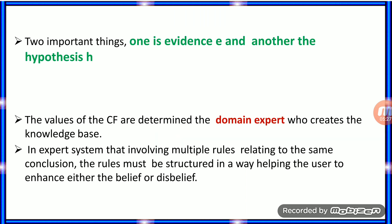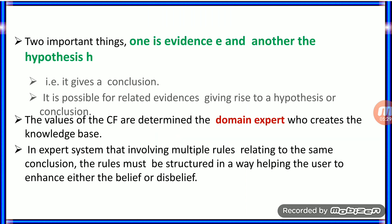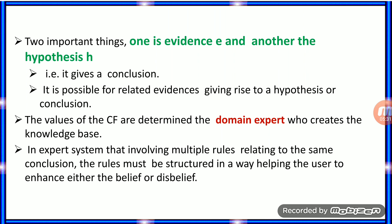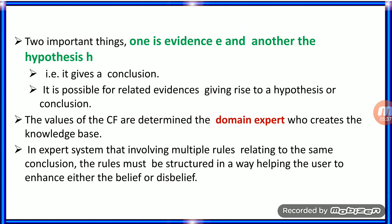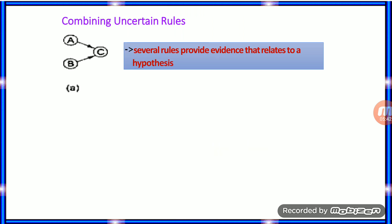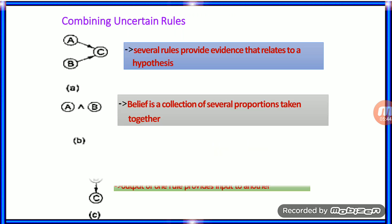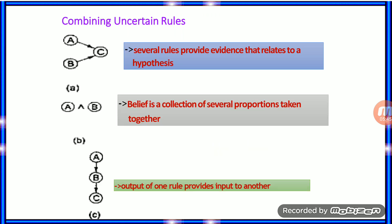Two important things: evidence E and hypothesis H give a conclusion. It is possible for related evidences to give rise to a hypothesis or conclusion. The value of CF is determined by the domain expert who creates the knowledge base. Now, we are going to see about combining certainty rules — three concepts.